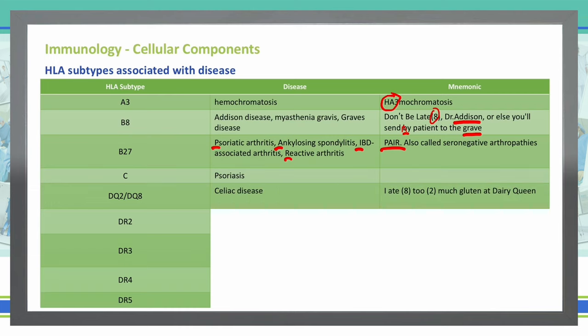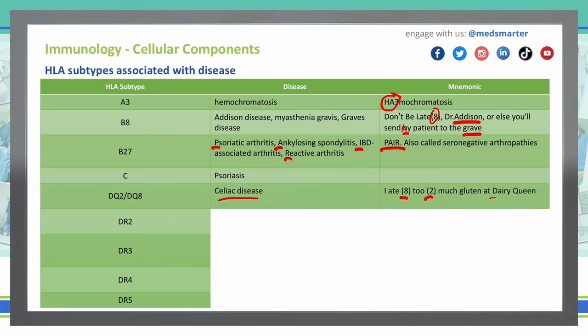HLA-DQ2 and DQ8 are associated with celiac disease. You can remember this as 'I ate too much gluten at Dairy Queen' — gluten is associated with celiac disease, Dairy Queen gives you DQ, so DQ2 and DQ8.